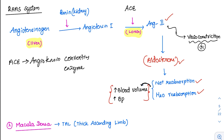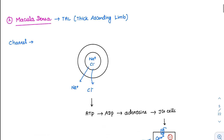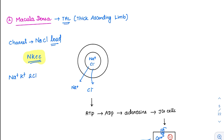Coming to macula densa — its function is to act as a sensor for sodium chloride load. To sense this, it has a specific channel called NKCC — sodium, potassium, 2 chloride channel. It will sense the sodium and chloride load very specifically. Whenever there is an excessive load of sodium chloride, which occurs when GFR increases, it will sense it and reduce the GFR.